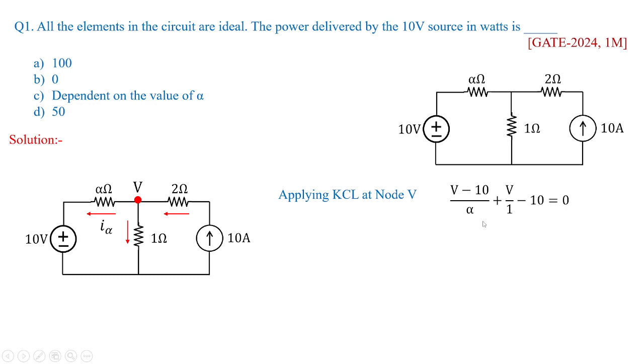So when you are going to apply this KCL you are going to get this equation taking like terms and unlike terms on one side and other side I am going to get V which is equal to 10 volts. Now once V is obtained the value of current I alpha that is nothing but 10 minus 10 by alpha which is nothing but 0 amperes.